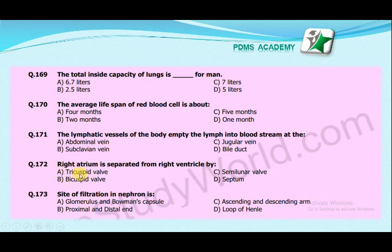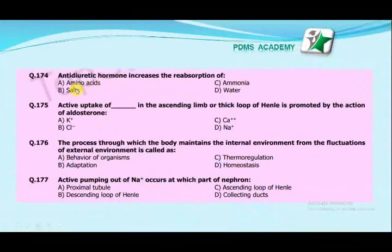To memorize it: the tricuspid wall is present on the right side of the heart, so the right atrium is separated from the right ventricle by the tricuspid wall. The site of filtration in the nephron is: glomerulus and Bowman's capsule, proximal and distal tubule, or ascending and descending loop of Henle? The correct answer is glomerulus and Bowman's capsule.